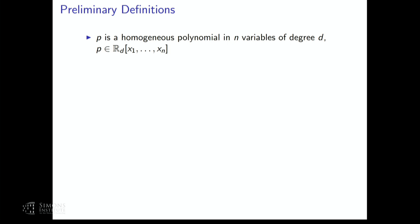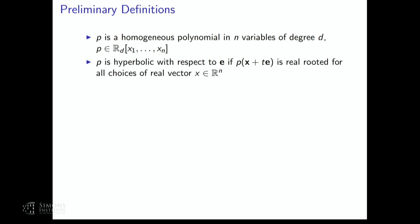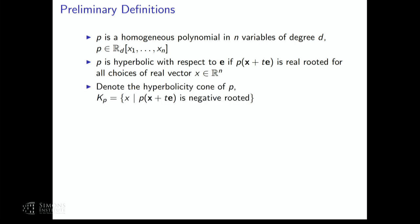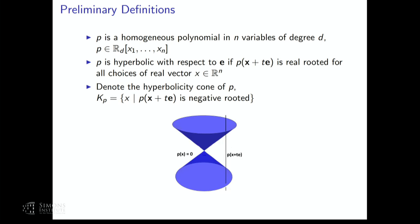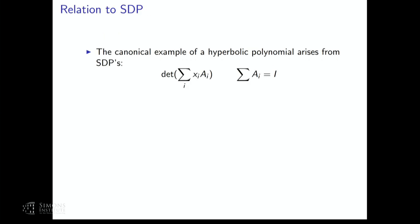Some definitions. I'll be using as a ground set of variables x1 through xn. My polynomial will be homogeneous of degree d in n variables. We have hyperbolicity with respect to some direction e if all linear restrictions in direction e are real-rooted. With hyperbolicity, we get a canonically defined convex open cone called the hyperbolicity cone. Here I've drawn the quintessential example where we're hyperbolic in the direction pointing upwards, and our cone is the cone shown here.